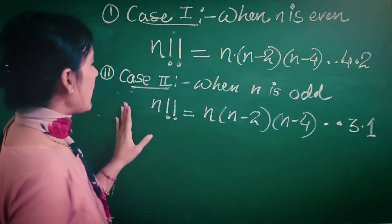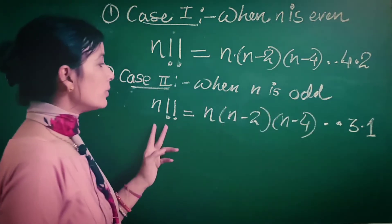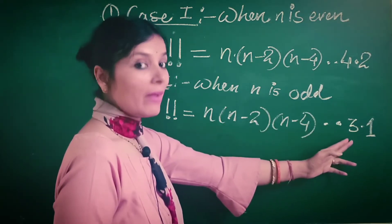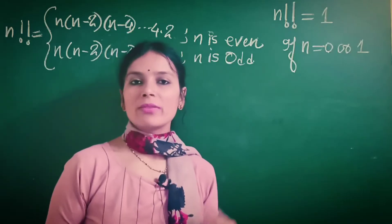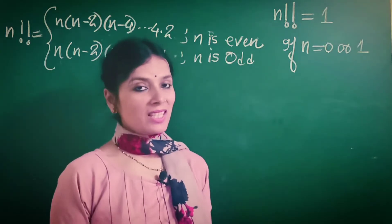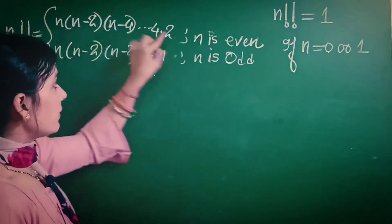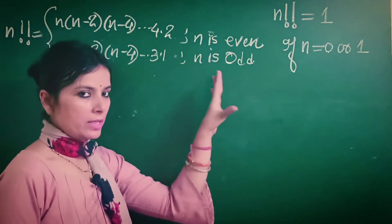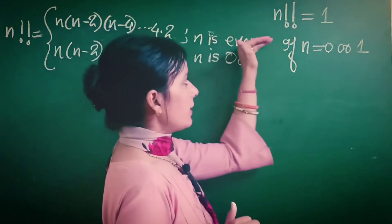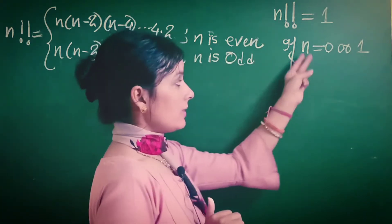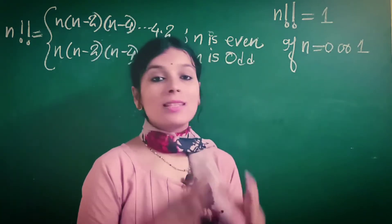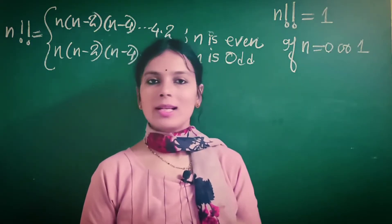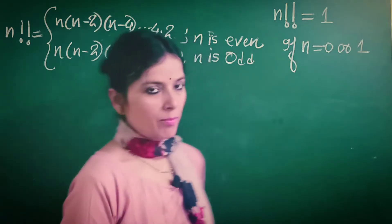When n is odd, n double factorial is n × (n−2) × (n−4) × ... × 3 × 1. In short, we can define double factorial as: for even n, n!! equals the product down to 2; for odd n, n!! equals the product down to 1. The special cases are: 0!! = 1 and 1!! = 1.